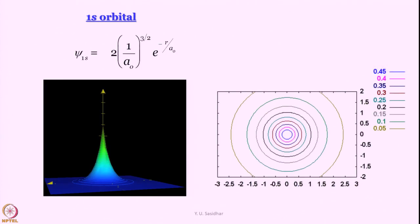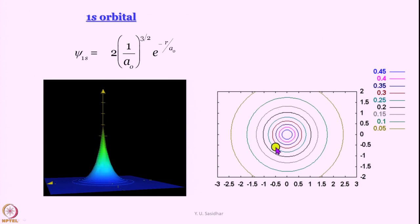Let us try plotting the orbitals as 3D pictures. In 3 dimensions, one axis is the orbital value (ψ) and the other 2 axes can be x and y, y and z, or x and z. This is actually a 4-dimensional picture: ψ is the 4th dimension and the spatial dimensions are r, θ, φ or x, y, z. Since we cannot draw a 4-dimensional picture, we can only draw 3-dimensional sections and then make contour plots of them.